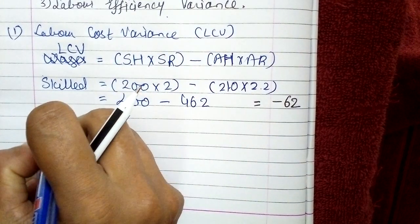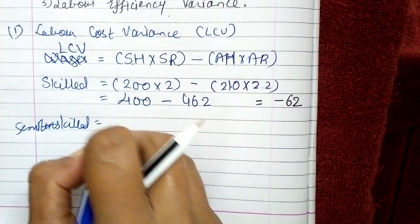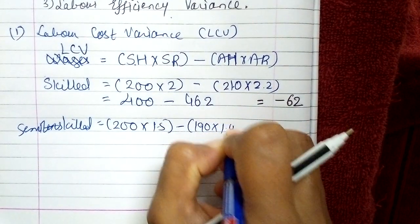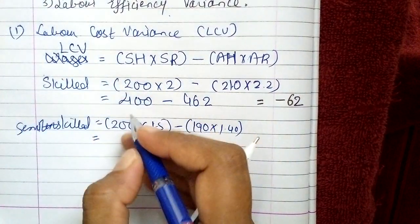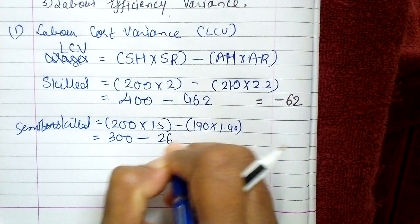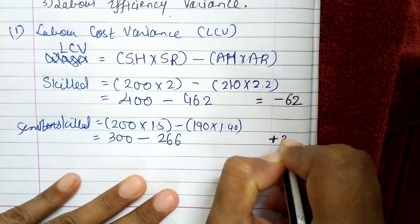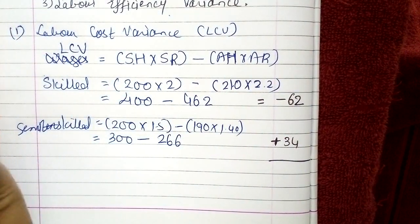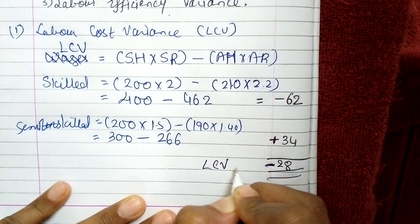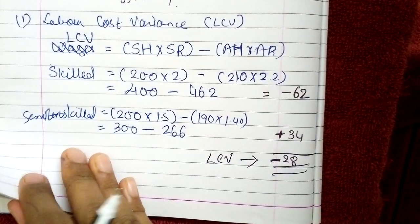Now for semi-skilled: standard hours 200 × 1.5 = 300, and actual 190 × 1.4 = 266. So here there will be positive 34. So 62 minus 34 — the answer will be negative 28. So the labor cost variance is negative 28.